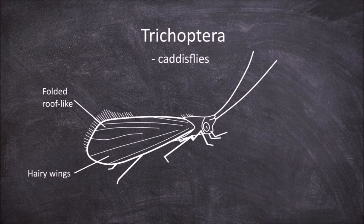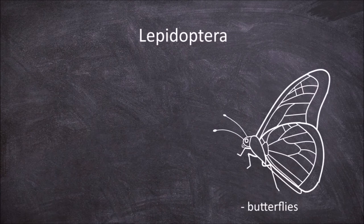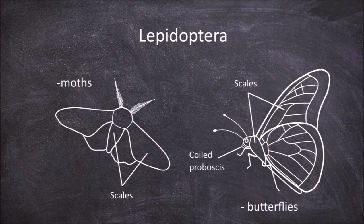The next order is the Lepidoptera, which are the butterflies and moths. The characteristic feature of this order is the presence of scales covering their wings and body. They also usually possess a coiled proboscis specialized for sucking.